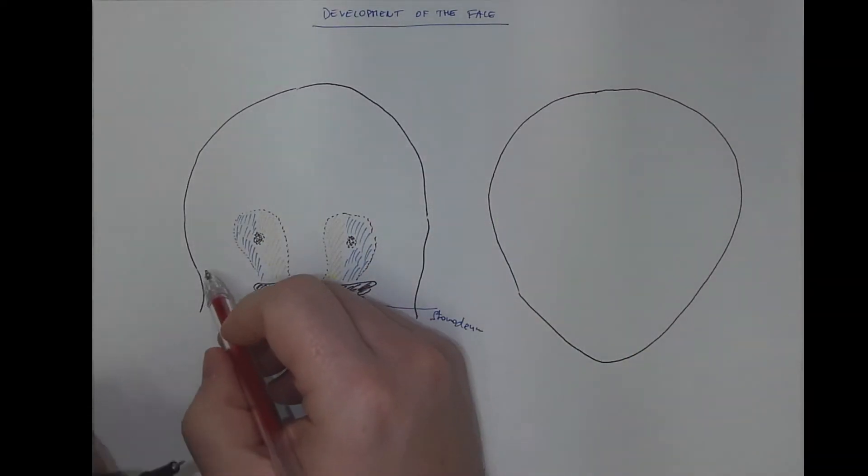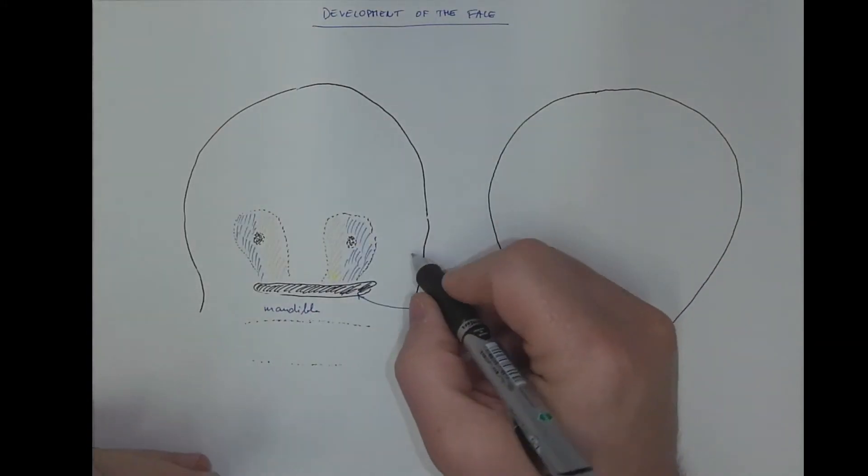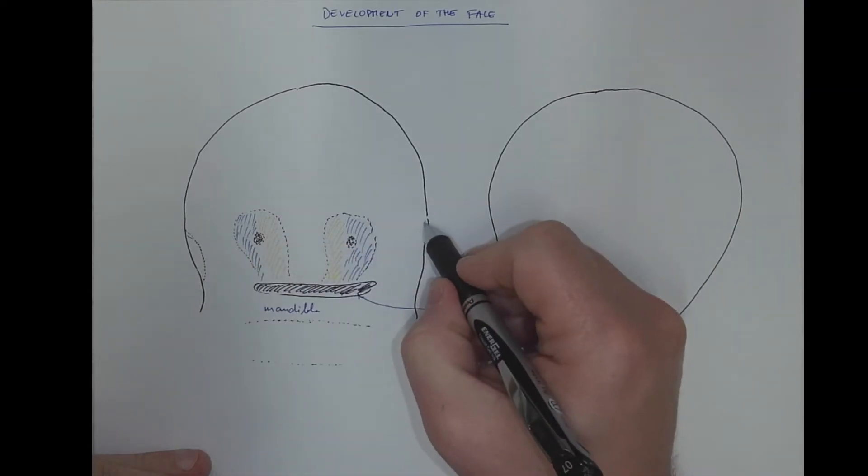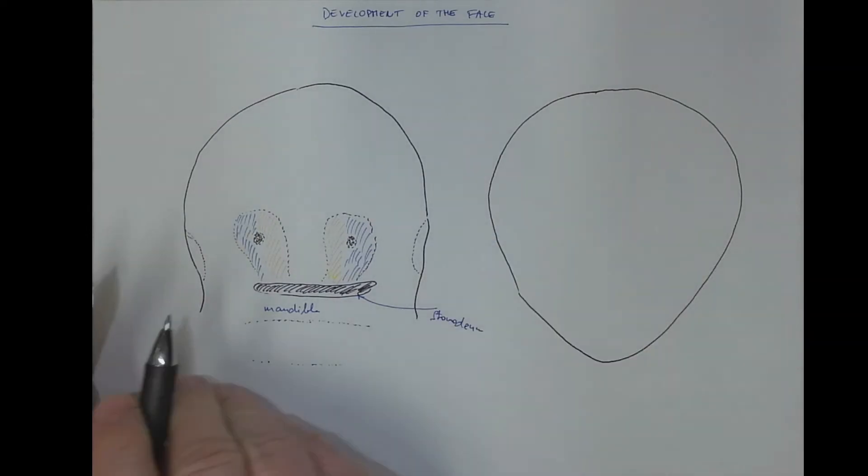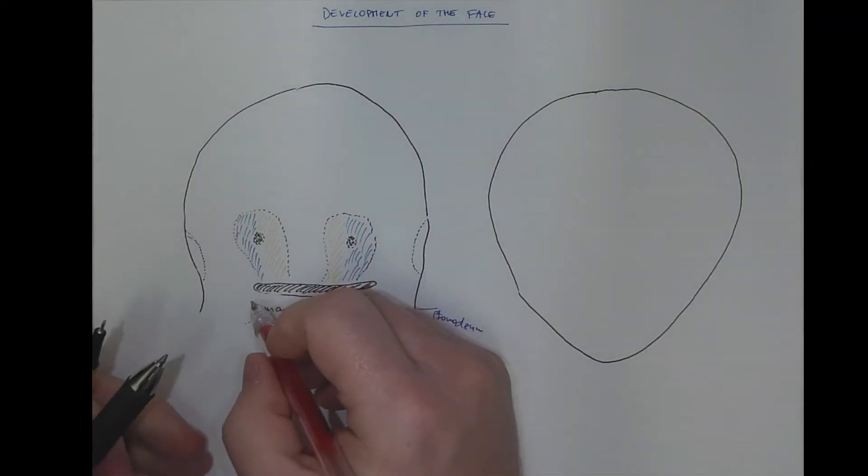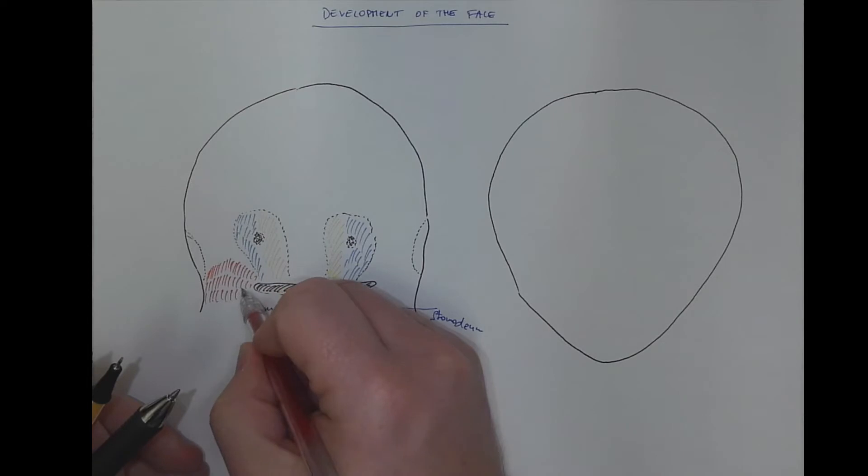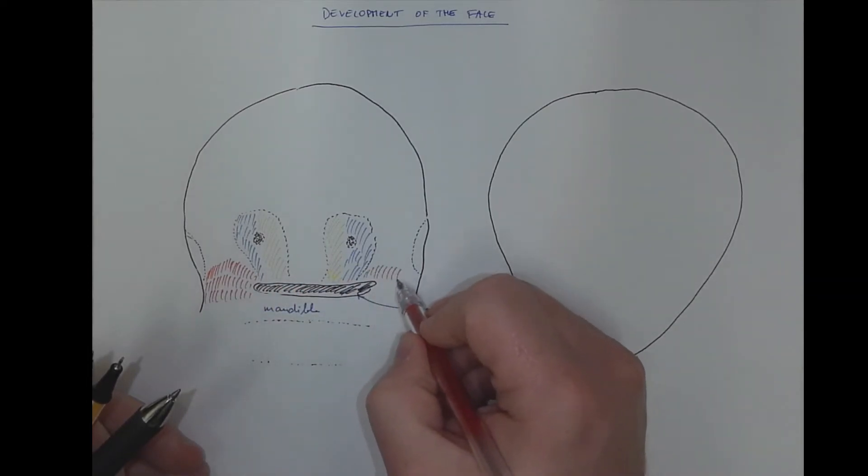We should not forget also the contribution of the maxilla, but first there will be the eye developing here laterally, before it moves into its final position. And here will be the maxillary prominence, elevated material also from the first pharyngeal arch, like the mandible. So I use red color for that.